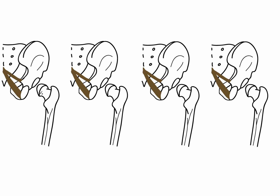On each of these drawings I'm going to draw one or a few muscles. On this one I'm going to draw gluteus maximus, the largest of the gluteal muscles. Then deep to that, gluteus medius, and gluteus minimus, the deepest of these three gluteal muscles.